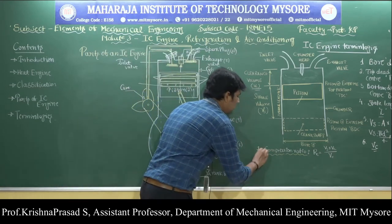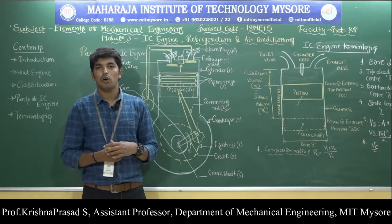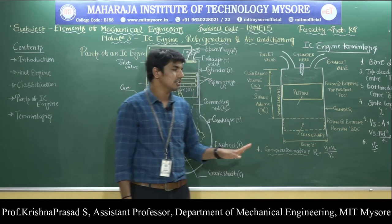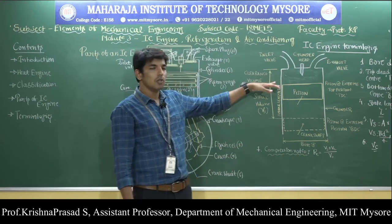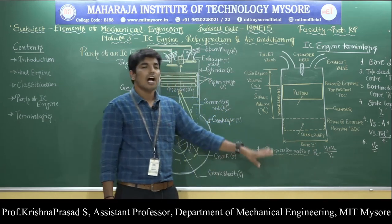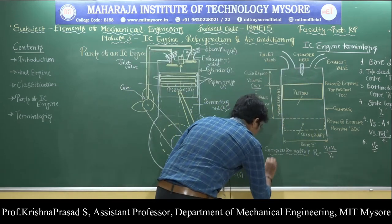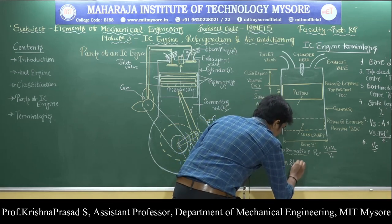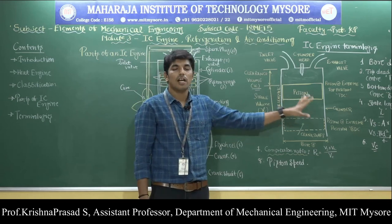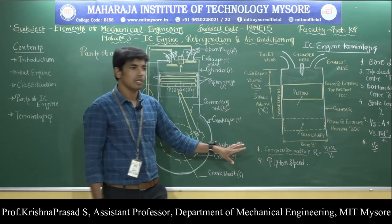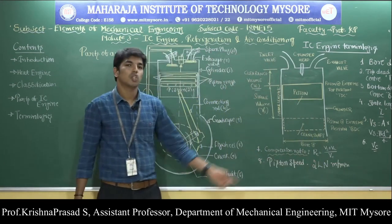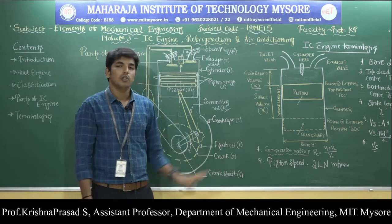The seventh term is compression ratio (Rc). Compression ratio is defined as the ratio of the total volume of the cylinder to the clearance volume. Total volume of the cylinder equals stroke volume plus clearance volume. So Rc = (Vs + Vc) / Vc. It is denoted by Rc. The eighth term is piston speed, which is the speed of the piston when it travels from TDC to BDC, indicated by 2LN meters per minute, where L is the stroke length and N is the engine speed in revolutions per minute (RPM).